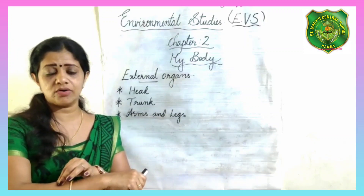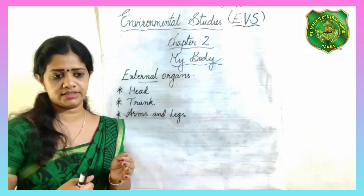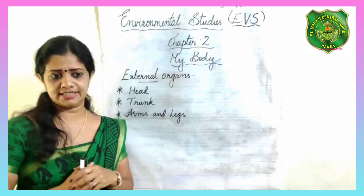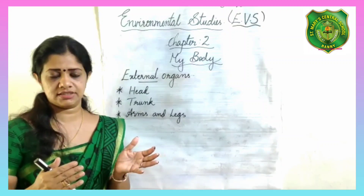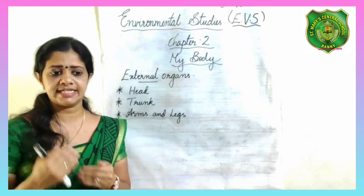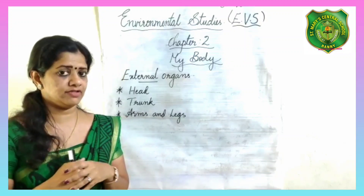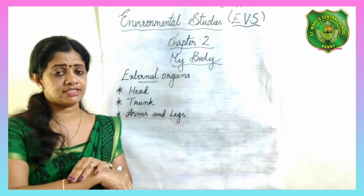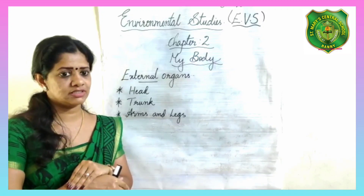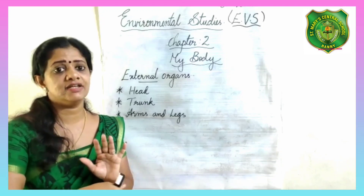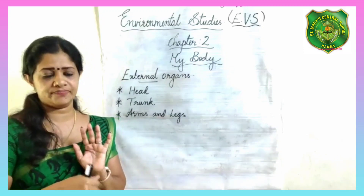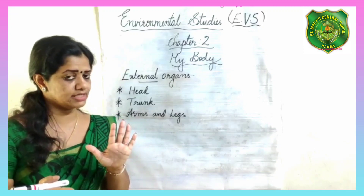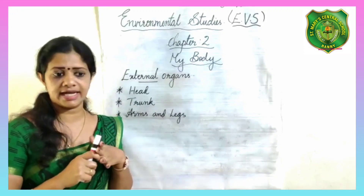The skin is the upper layer of our body found all over our body. The skin protects our body. We feel various sensations with the help of skin — for example, whether it is cold or hot. So, we have five sense organs: eyes, ears, nose, tongue, and skin.